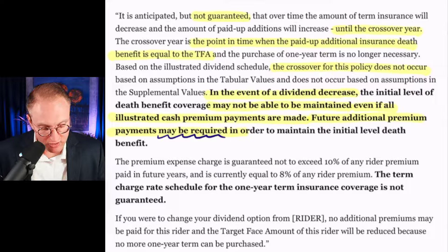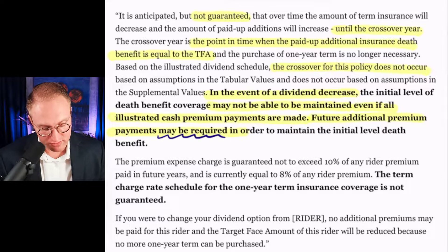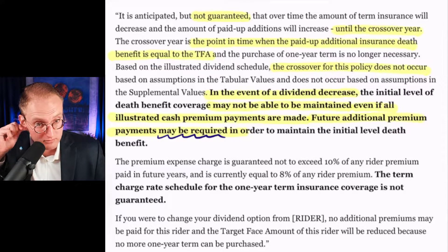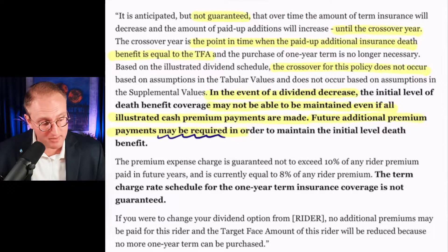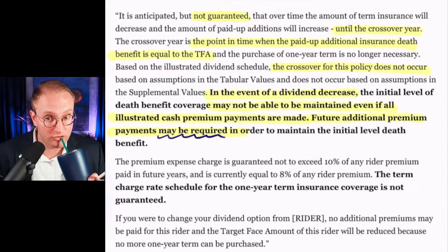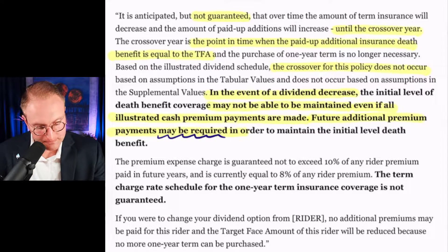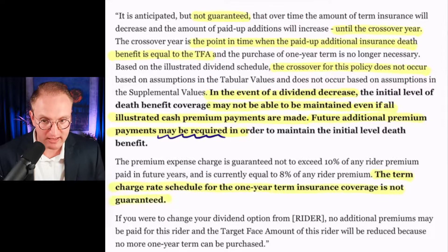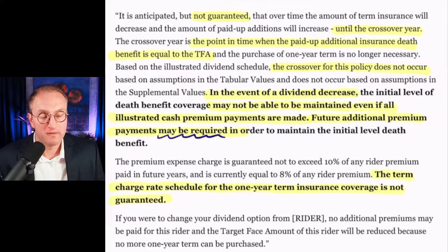The premium expense charge for the rider is guaranteed not to exceed 10% of any rider premium paid in future years, and is currently equal to 8% of any rider premium. That's common — not unusual. The term charge rate schedule for the one-year term insurance coverage is not guaranteed. Of course it's not — it's one-year term. The fact that it's not guaranteed is embedded in the fact that it's one-year term. Every time there's a renewal at the end of the year, it will be repriced.